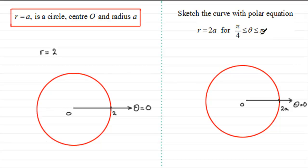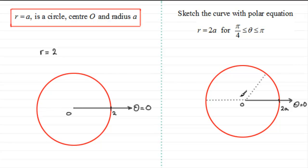But we've got a restricted domain here: theta greater than or equal to pi upon 4, but less than or equal to pi radians. If I draw in theta equaling pi upon 4 radians, that would be an angle up here — equivalent to 45 degrees. And pi radians, which is equivalent to 180 degrees, would take us out here.